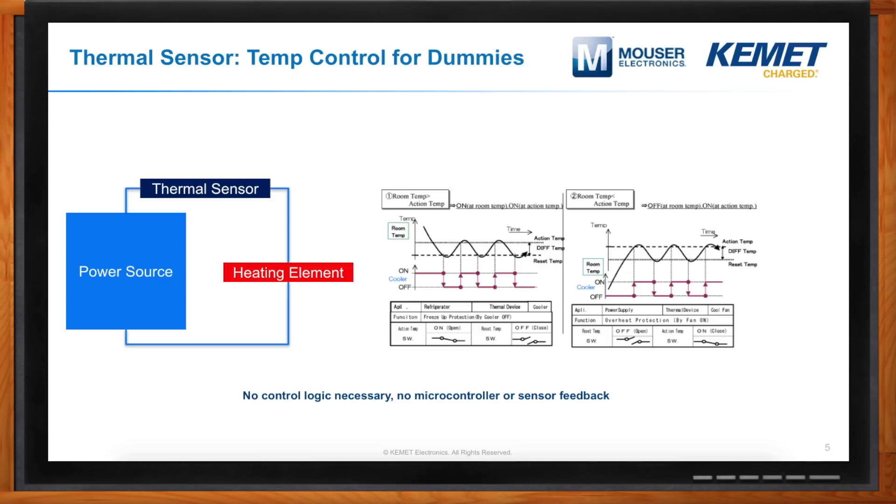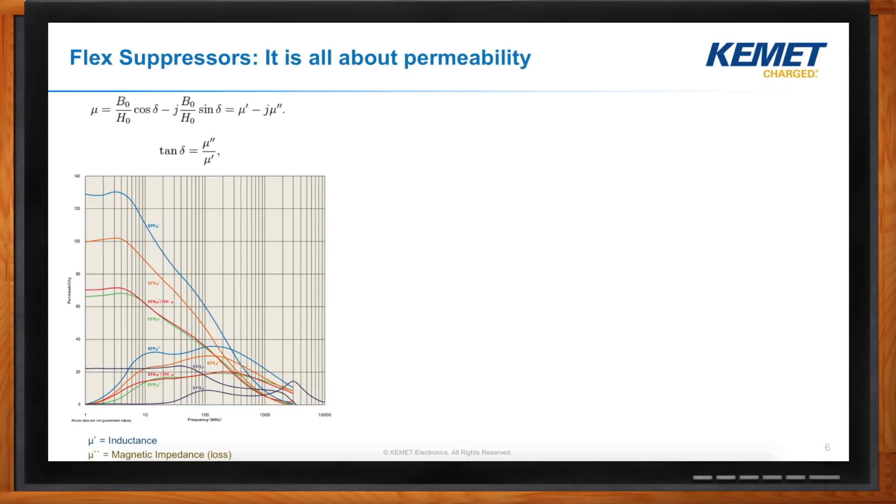Now, I hear that magnetic devices are often used in EMC. Is that also the case with some of your devices? Yeah, that's right. We also have a device that we call a flex suppressor. So, let me go into some background on permeability. If you look at permeability, it's actually a complex quantity that has a real and an imaginary component. We'll call the real component of this complex permeability mu prime. Mu prime corresponds to the inductance of the material.